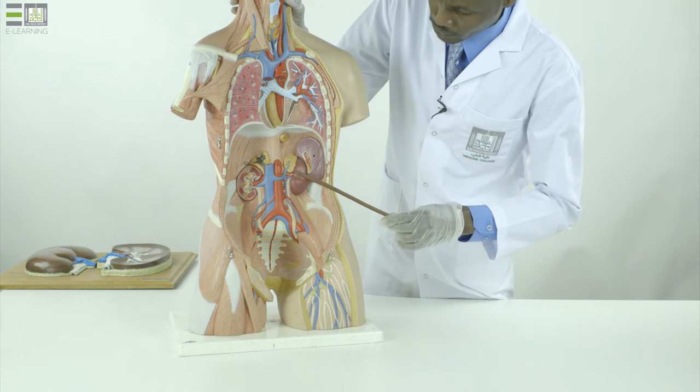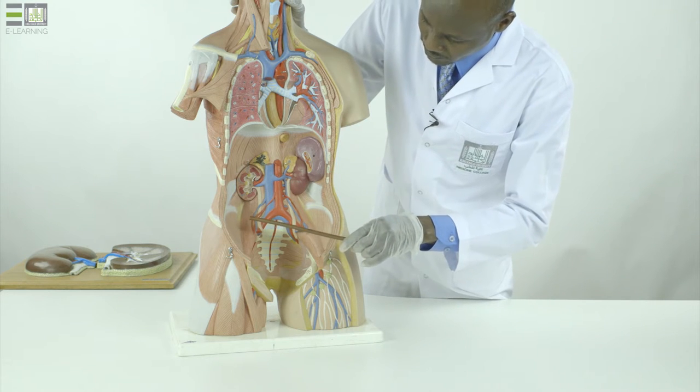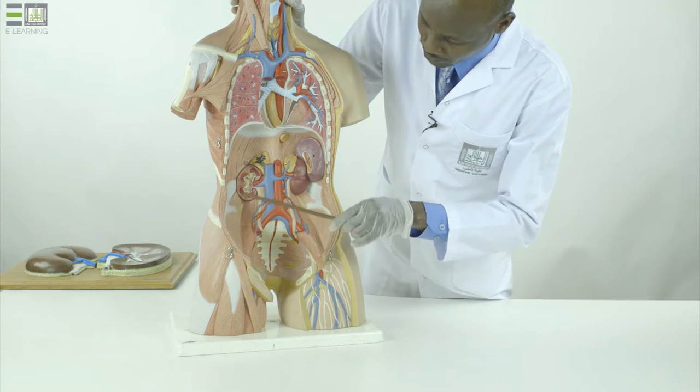We use this plastic model to describe the structures within the posterior abdominal wall. Start with the muscles which form our posterior abdominal wall.